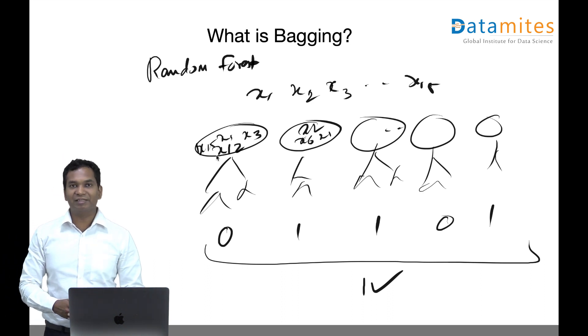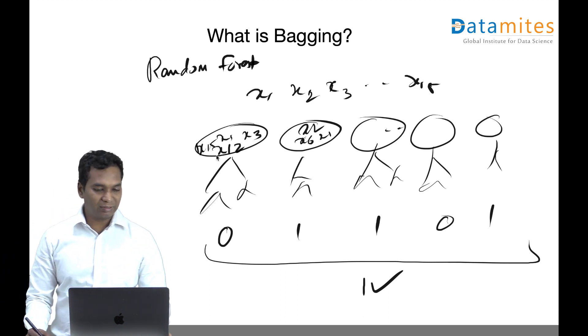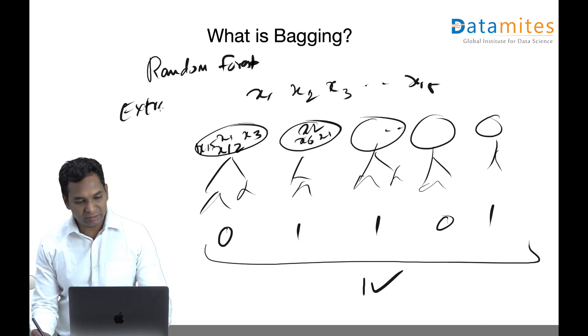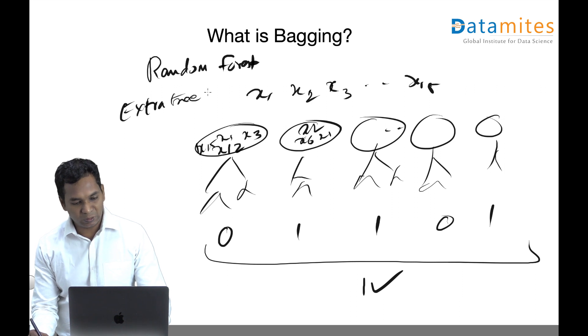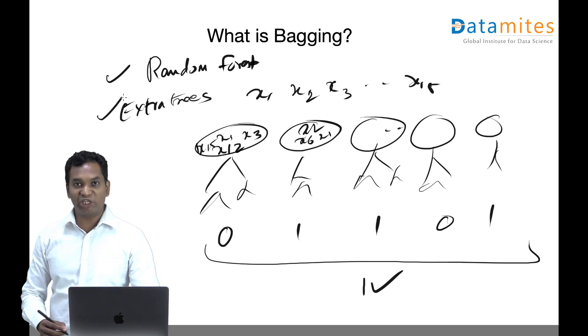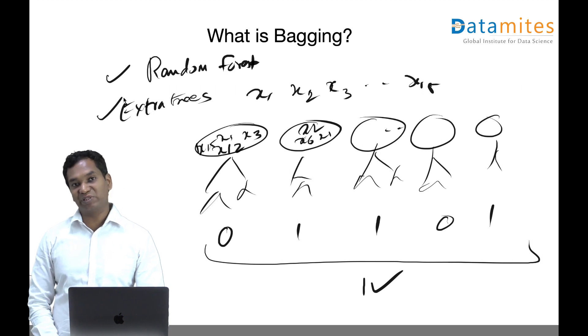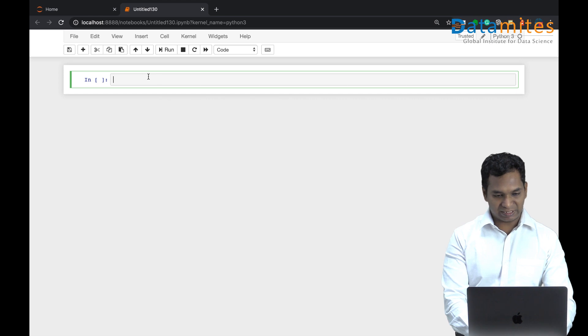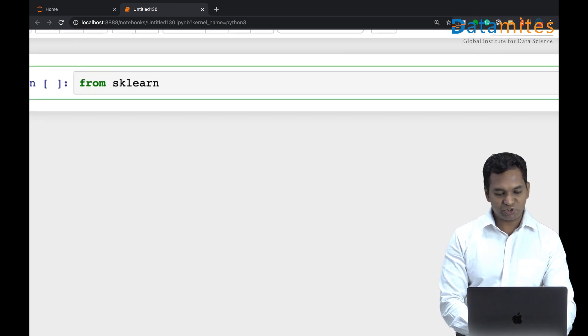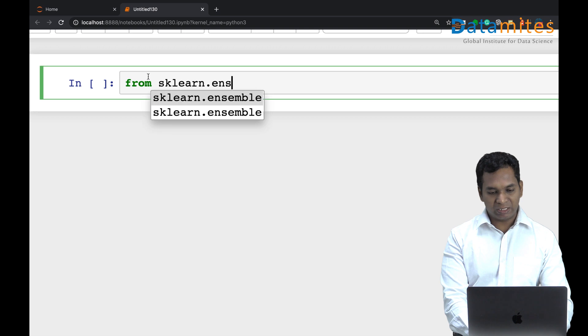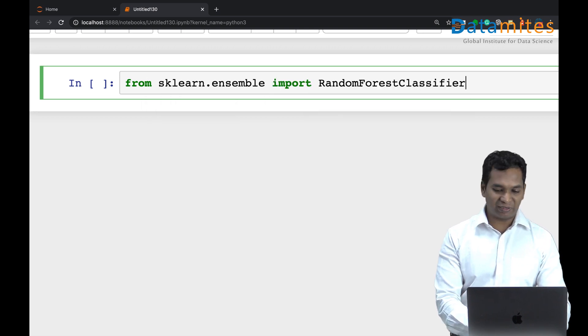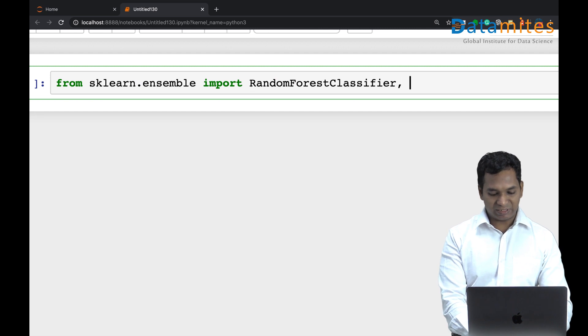There are many bagging implementations. Extra trees is also one of the popular implementations in the sklearn package, which is basically a bagging technique. You can find these bagging techniques from the sklearn.ensemble package.